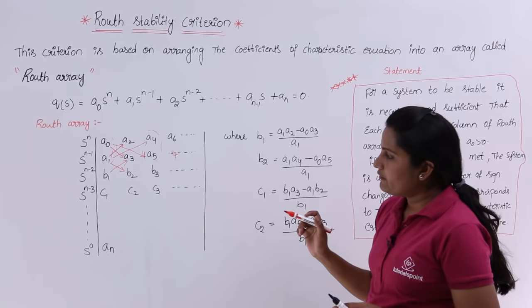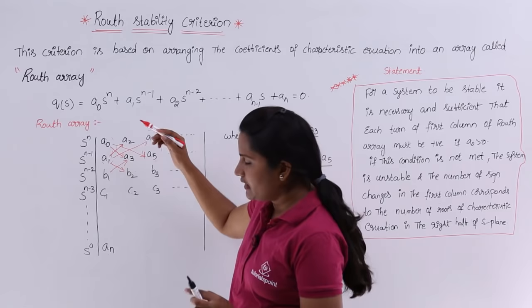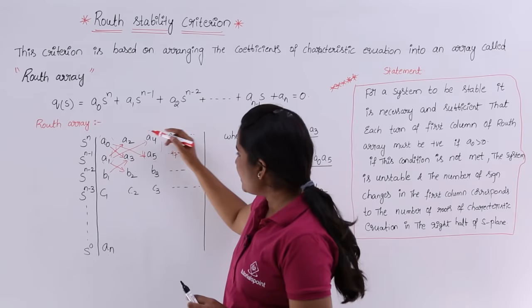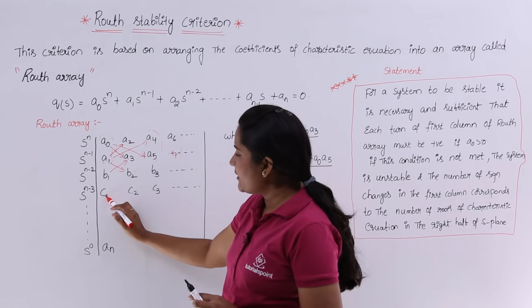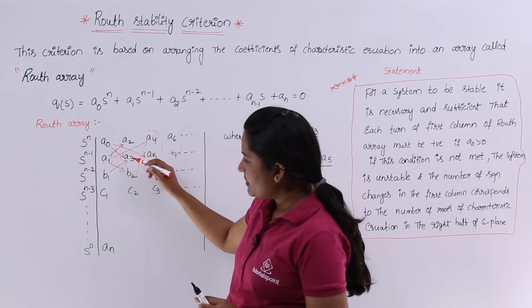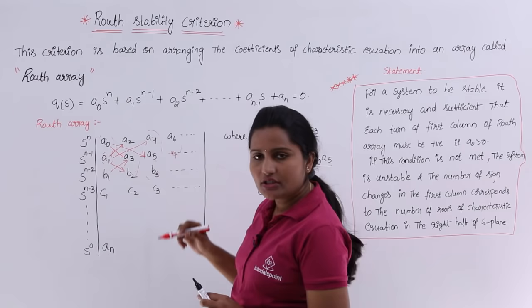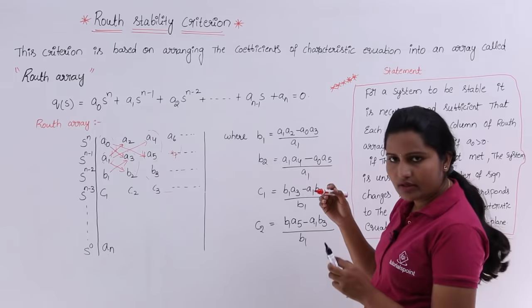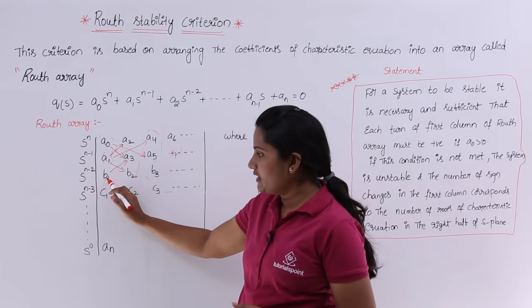To summarize the pattern: to get b₁, b₂, or b₃, the formula is always divided by a₁. To get c₁, c₂, or c₃, the formula is always divided by b₁. Each new row divides by the first element of the row immediately above it.